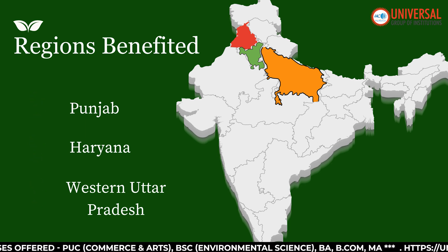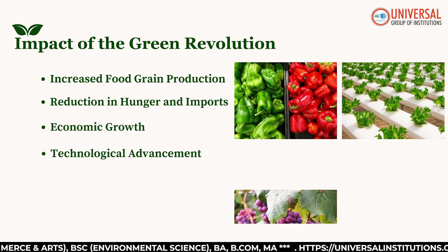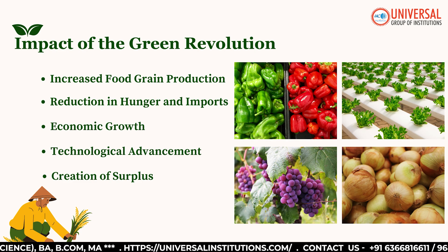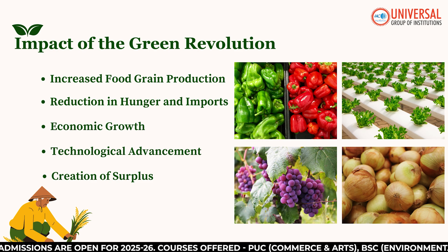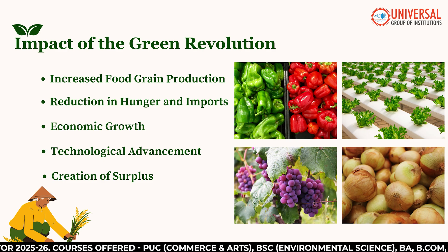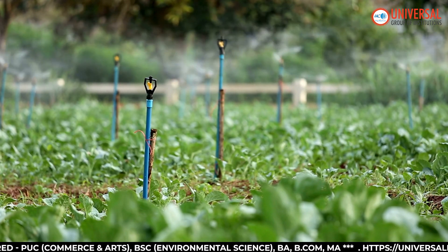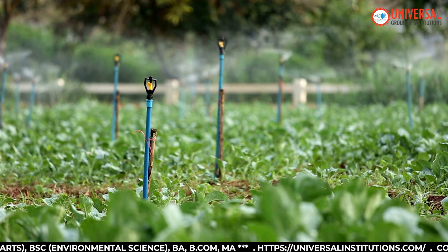The impact of the Green Revolution was significant. India became self-sufficient in food grains by the mid-1970s. Food production increased from 50 million tons in 1950-51 to over 200 million tons by the 1990s. Dependency on foreign food aid decreased significantly. It boosted rural income and agricultural GDP, modernized Indian agriculture through mechanization and scientific practices, and enabled the establishment of the public distribution system and food grain exports.